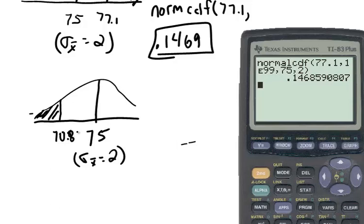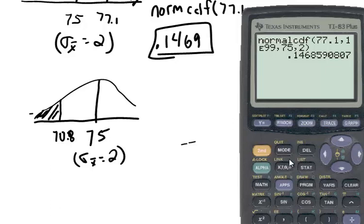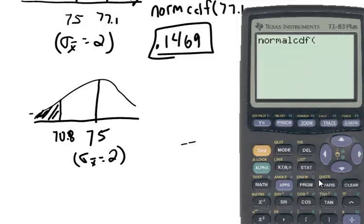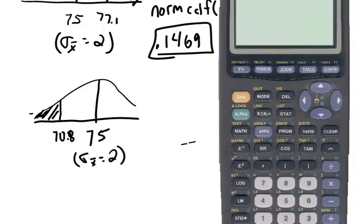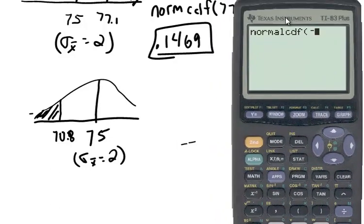So what's it going to be? I'm going to have normal CDF. Let me clear this out. So normal CDF. Left bound is actually negative infinity this time, right? So let me pop that negative key in here. So negative 1 E99, comma, go up to 70.8,